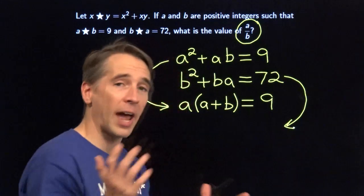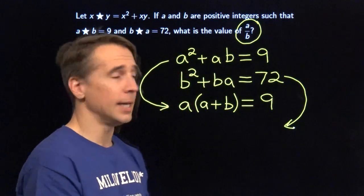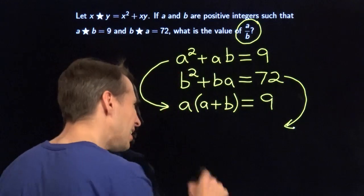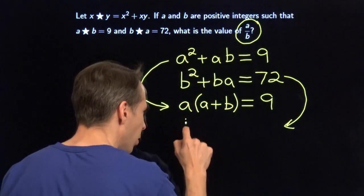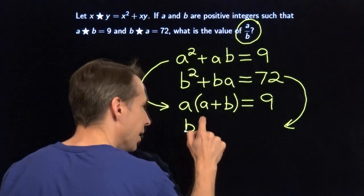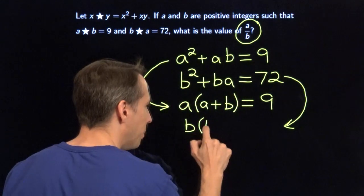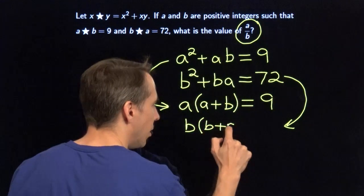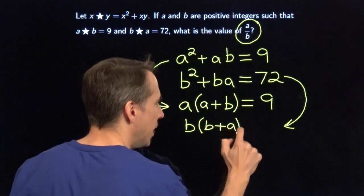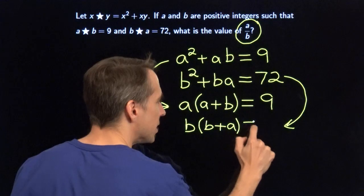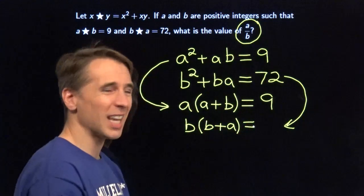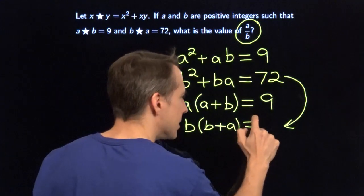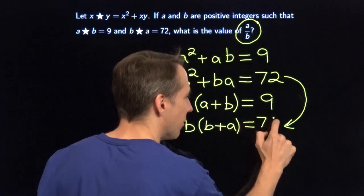This time we're factoring out a b, so I kind of have an a all alone here and a b all alone down here. Factor out a b and we have b times (b plus a), and this has to equal 72.